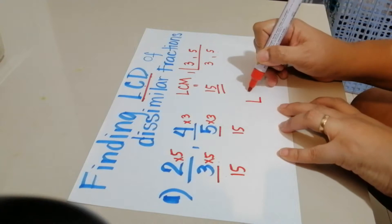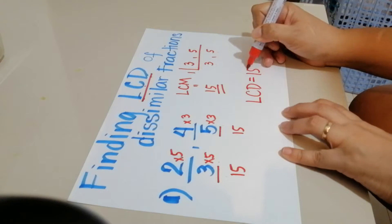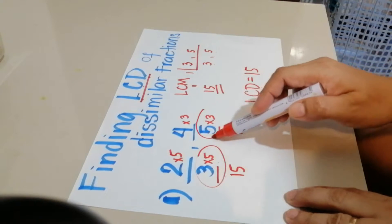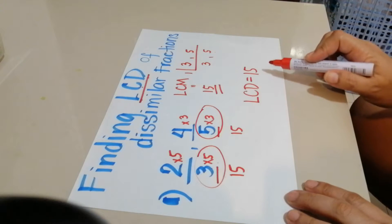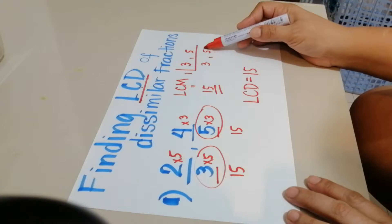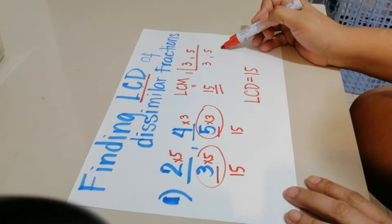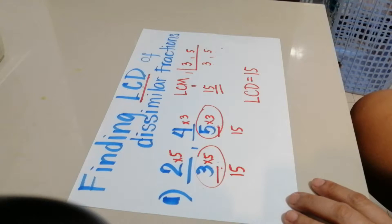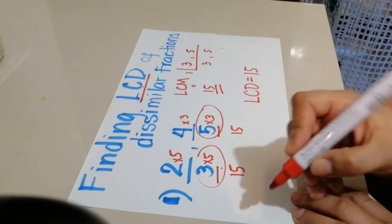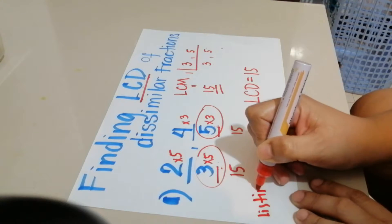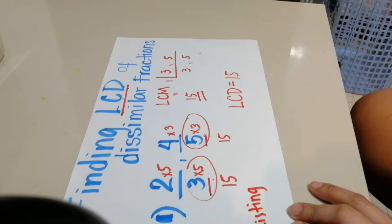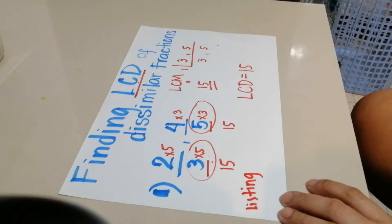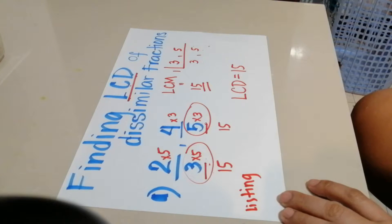So the answer here is LCD equals 15. We just look at the bottom: 3 times 5. That is how you get the LCD using LCM or by interchanging the denominators. Another way is through listing. With listing, we simply skip count, and the first number common to both is their LCD.